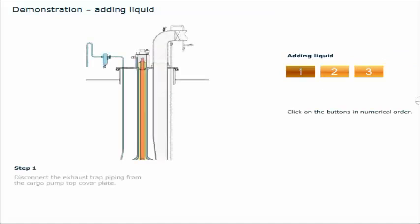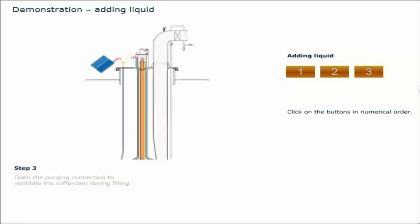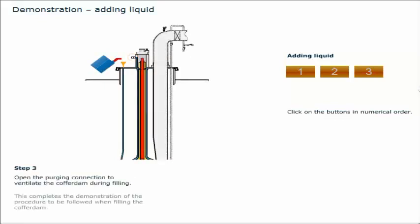Disconnect the exhaust trap piping from the cargo pump top cover plate. Using a suitable adapter, fill the liquid through the cofferdam check pipe. Open the purging connection to ventilate the cofferdam during filling. This completes the demonstration of the procedure to be followed when filling the cofferdam.